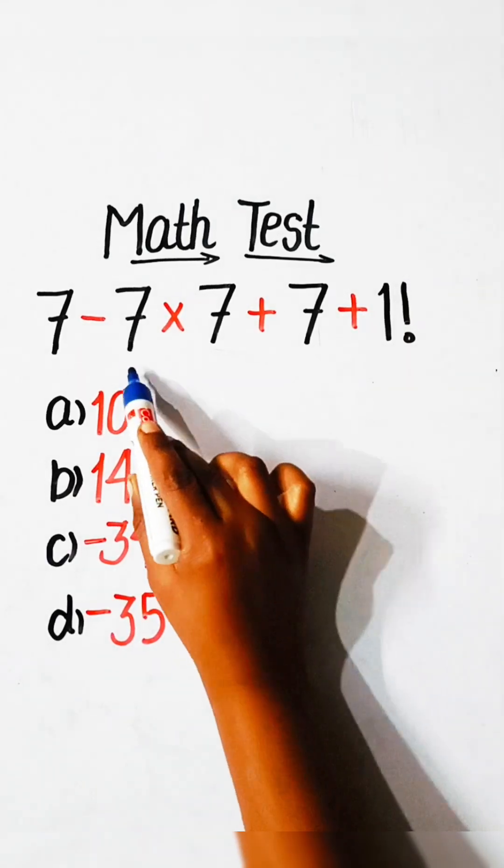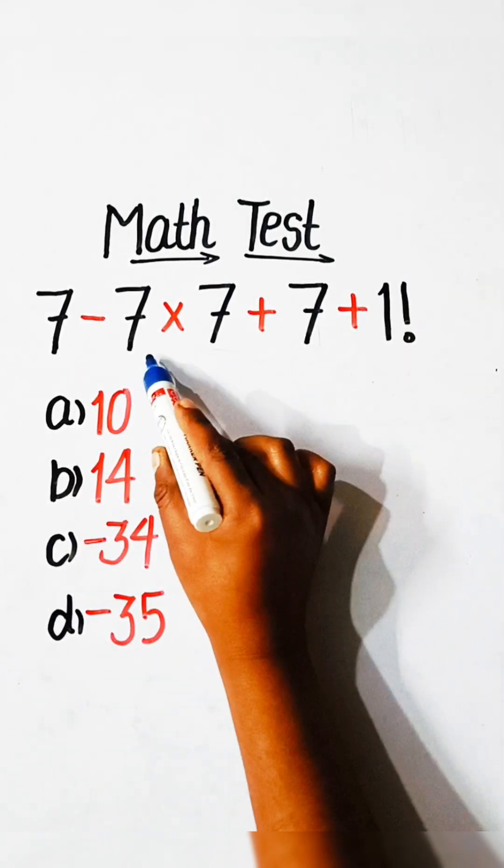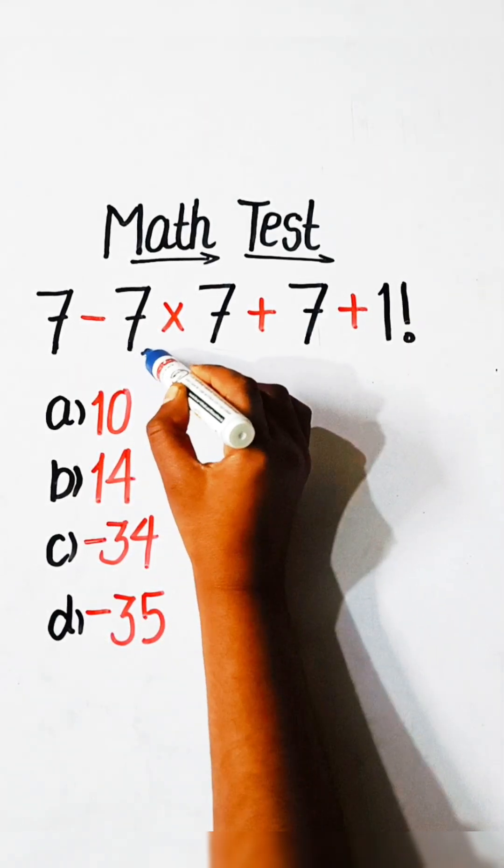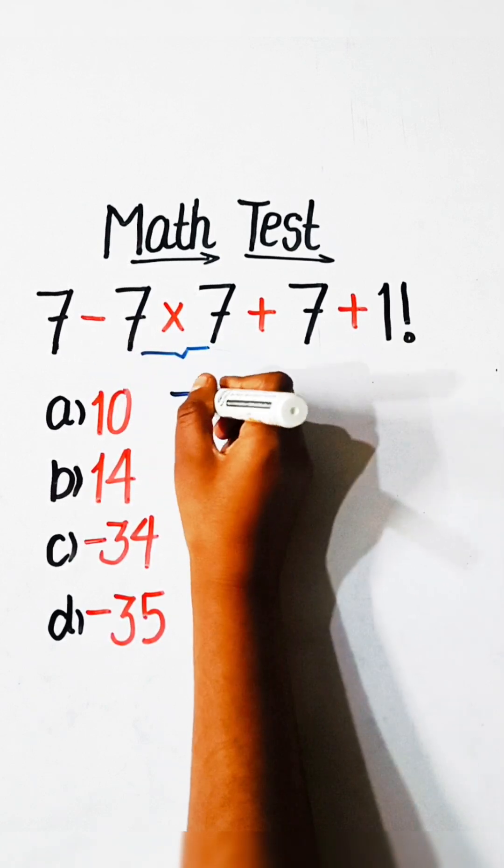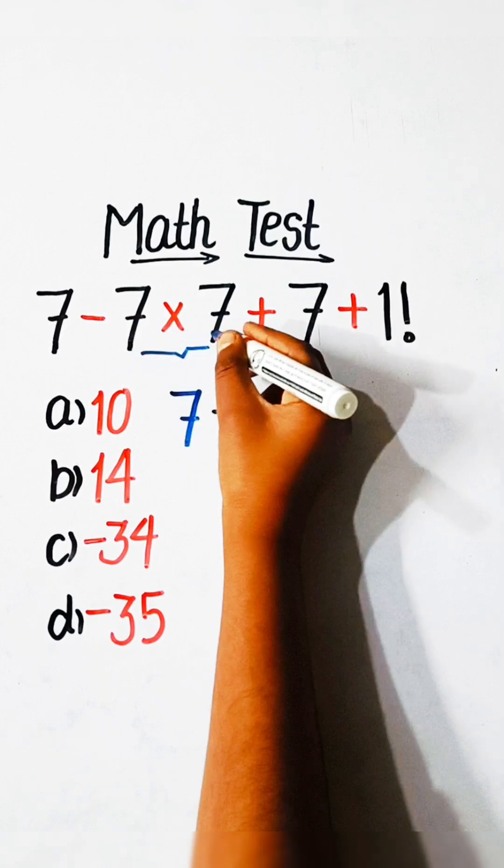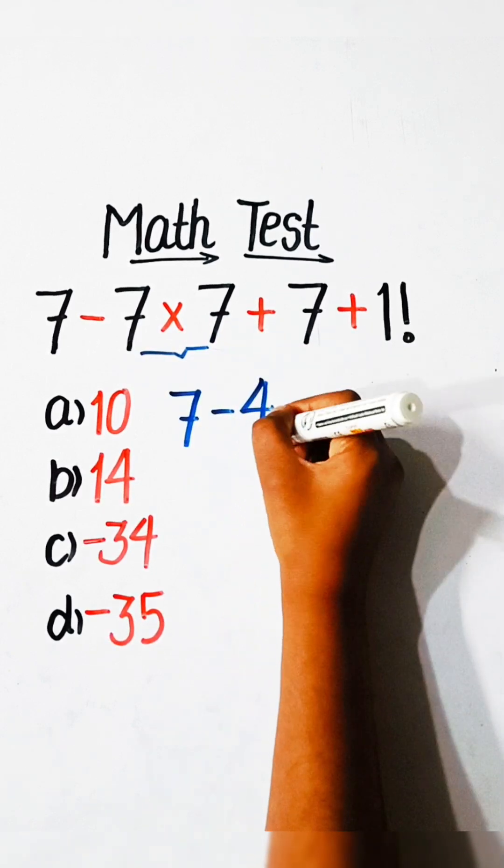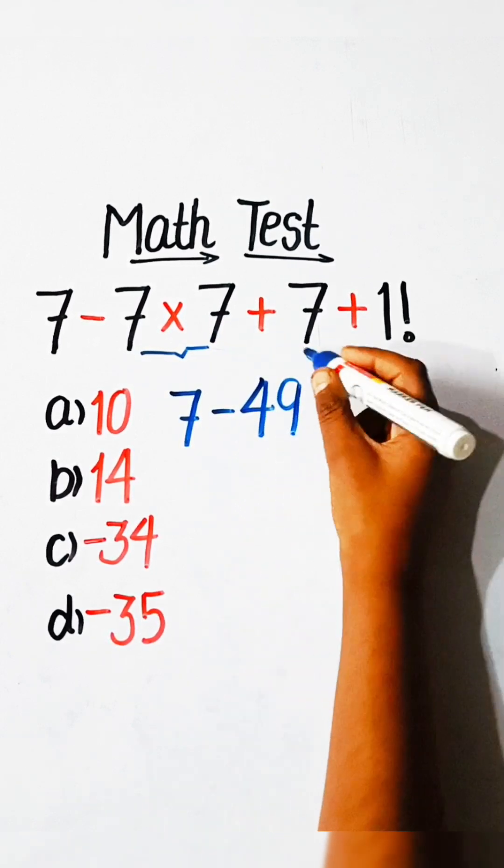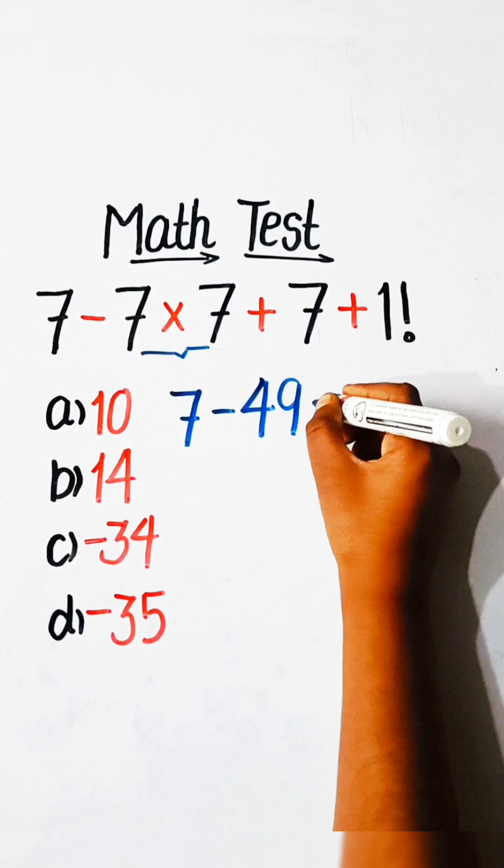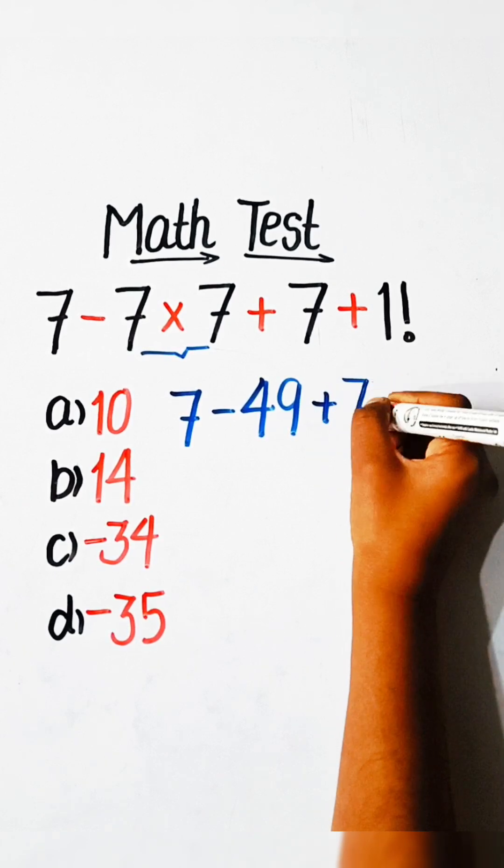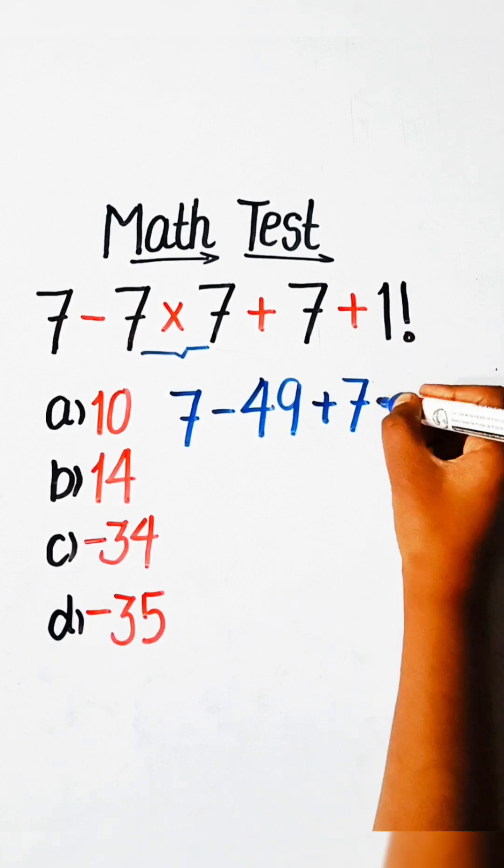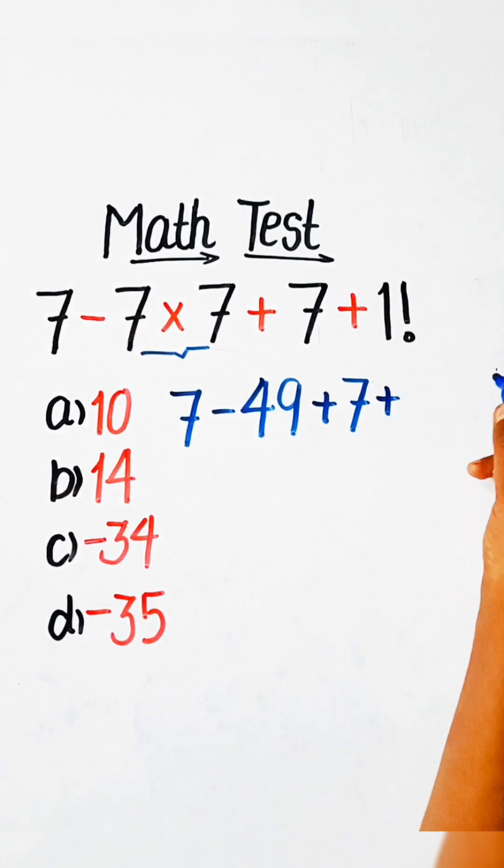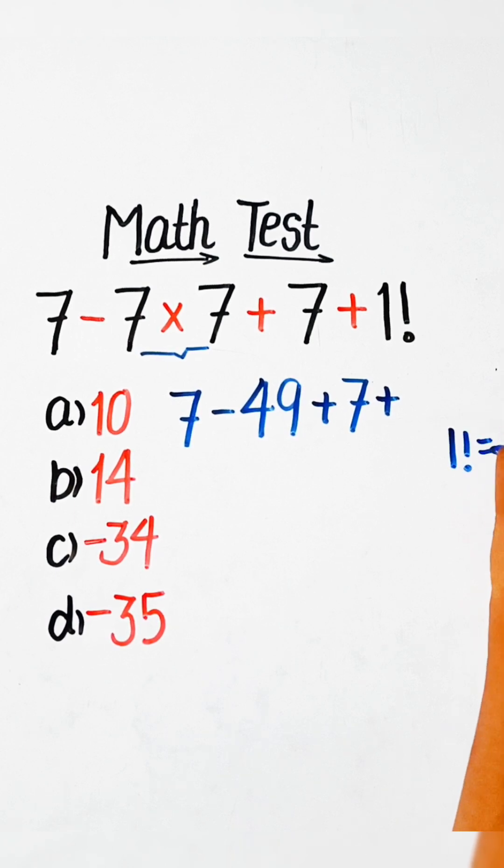In this equation, first of all, we have to solve multiplication. So we will write here 7 minus 7, 7's are 49 plus 7 plus 1 factorial. The value of 1 factorial is equal to 1, so we will write here 1.